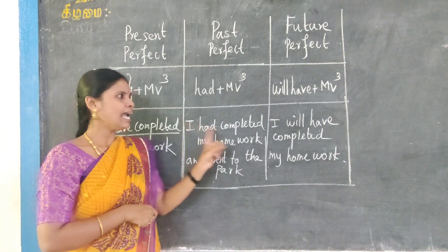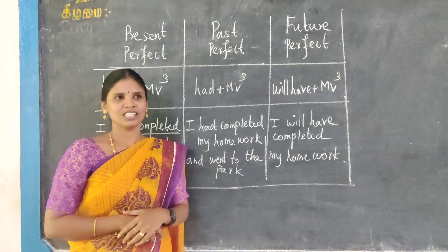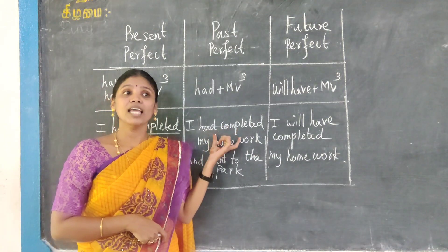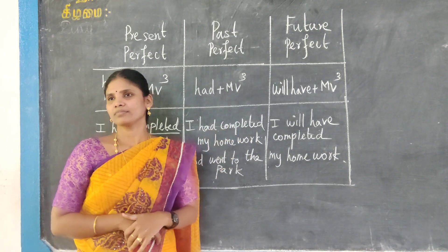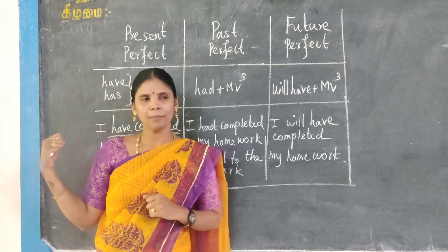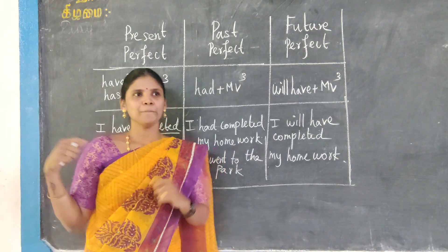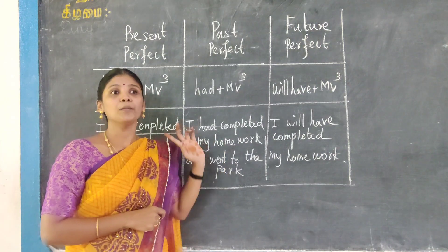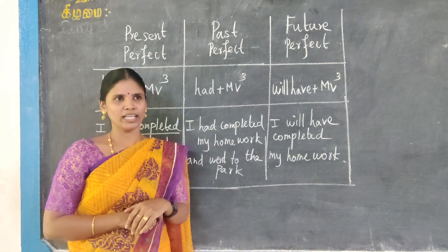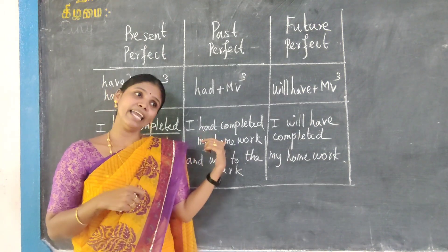For example, I had completed my homework. I had completed my homework — that is past perfect. You are present, and then I had completed.